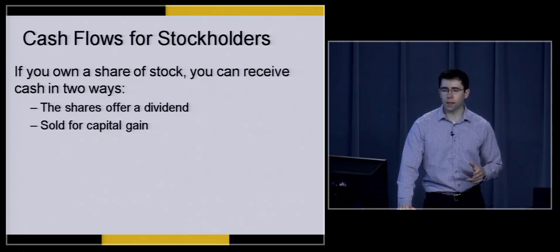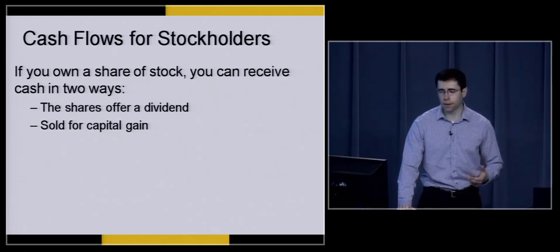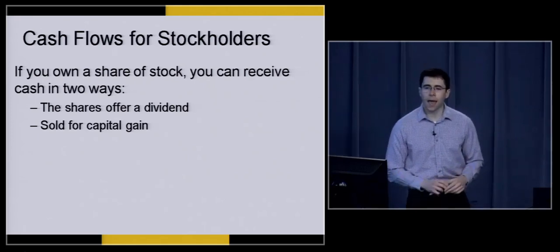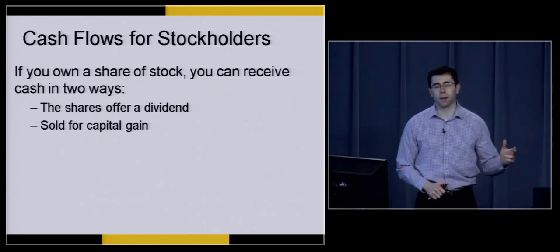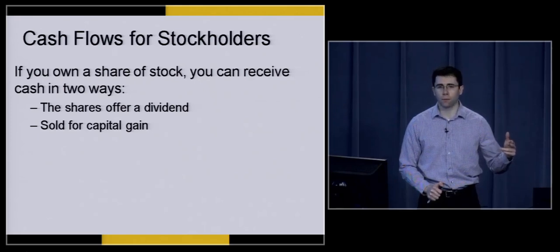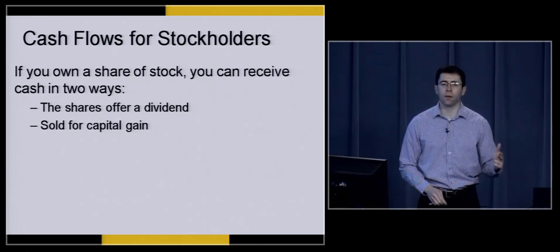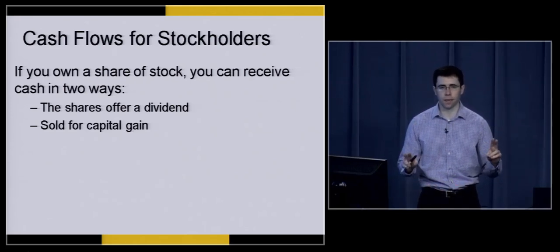One of the ways that we can estimate the value of a company or its stock is by taking those dividends and discounting them back to the present. So what we're doing is estimating the expected future dividends from that stock, discounting them back to the present, and using that as our estimate for the firm's value — what we'll call the intrinsic value.